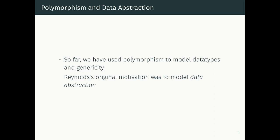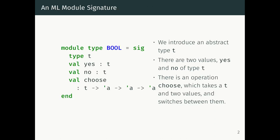When John Reynolds invented the polymorphic lambda calculus in the mid-1970s, he was actually interested in how to model data abstraction, which is one of the most important ideas in computer science. It's something we tell every student of programming: you should program to an interface, not to an implementation. So what does that mean? Here's a really concrete example.